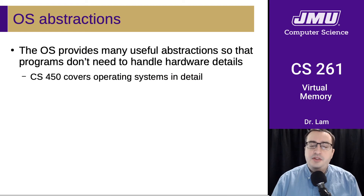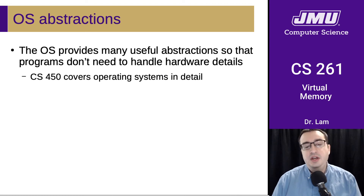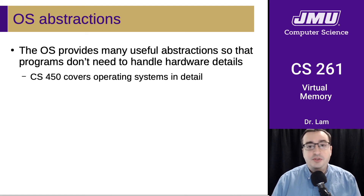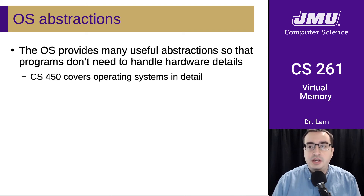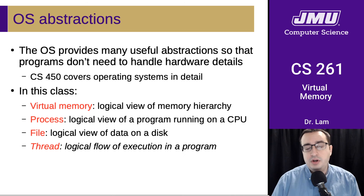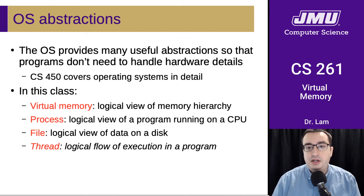The operating system provides a lot of useful abstractions so that programs don't have to handle the hardware details. We're going to talk about this in this course, but we definitely don't have time to cover everything. If you're interested, we have an upper-level systems class — CS 450 — that covers operating systems in much greater detail than we'll be handling in this module. We're going to focus on three or four major abstractions that are extremely useful.